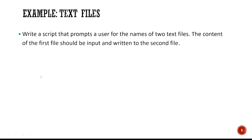Here's another example for text files. We want to write a script that prompts a user for the names of two text files. The content of the first file should be read and written to the second file — essentially a copy-paste operation. The first step is to ask the user, so we'll have two input statements. Then we define a variable containing the information from the first file, open the second file in writing mode, and assign that content to it.